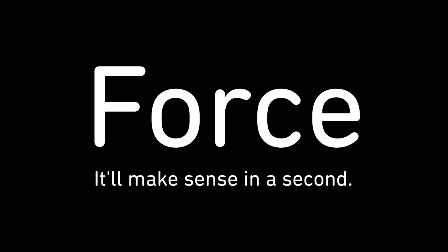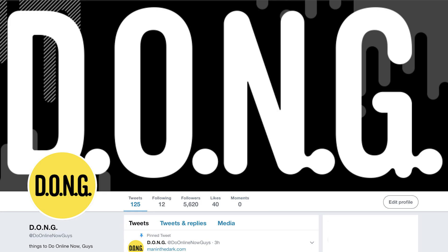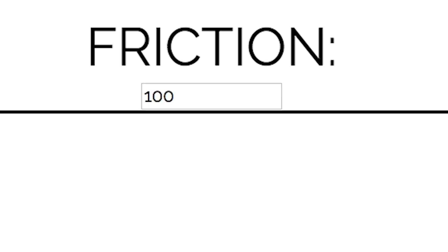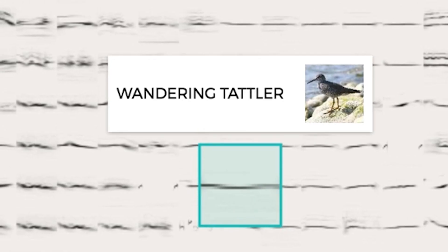Now I won't force you to go to Physics Experiments, but I will recommend it — just like it was recommended to us on the DONG Twitter account by SpiceTiwan. It lets you manipulate factors that affect the movement of the square. The lower the gravity, the more it floats around. With too much friction it will barely move at all, but when you lower it and increase the elasticity it happily bounces around.